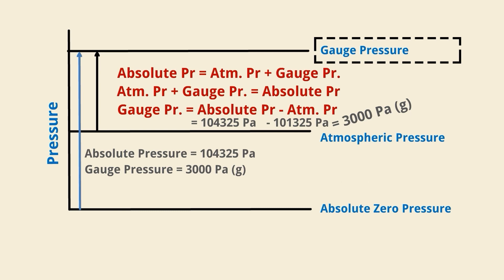We write G in brackets to indicate gauge pressure, and A in brackets to indicate absolute pressure.